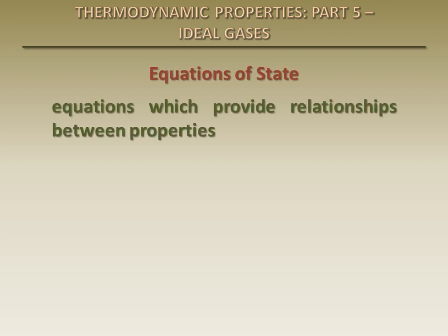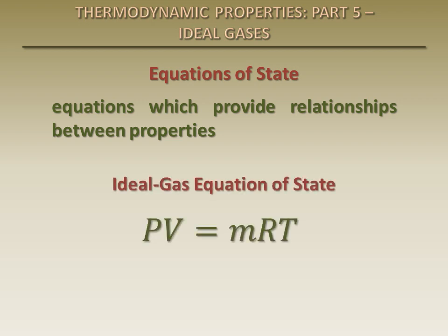The simplest and best-known equation of state is the ideal gas equation, which provides the following relation between pressure, volume, mass, and temperature of gases. The constant of proportionality between these properties is called the gas constant, R. This constant is different for every gas.